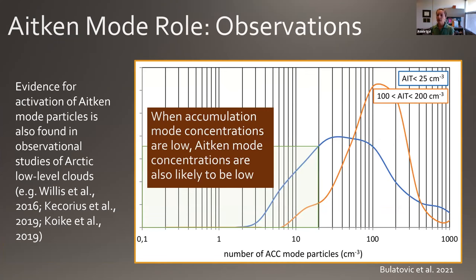As you increase the accumulation mode concentration, the Aitken mode becomes increasingly less important. By about 10 per cubic centimeter accumulation mode, the impact of the Aitken mode has decreased dramatically. However, we find that the Aitken mode and accumulation mode concentrations tend to be correlated — if one is low, the other is also low. So while the Aitken mode seems important when accumulation mode is low, it may not always be able to save our clouds when particle concentrations are getting low.